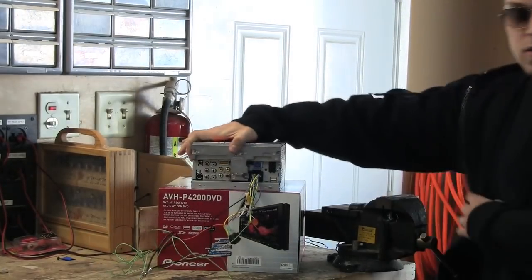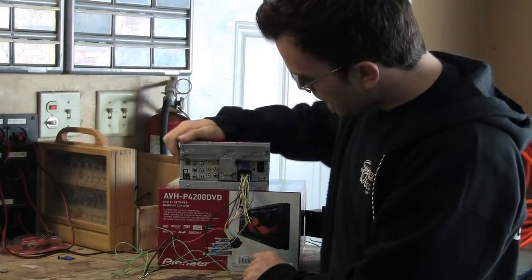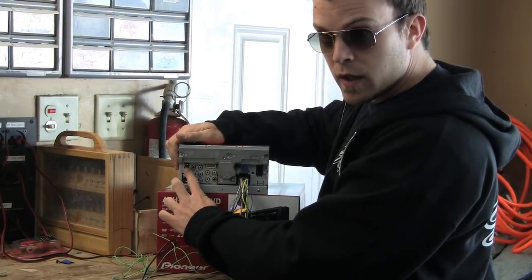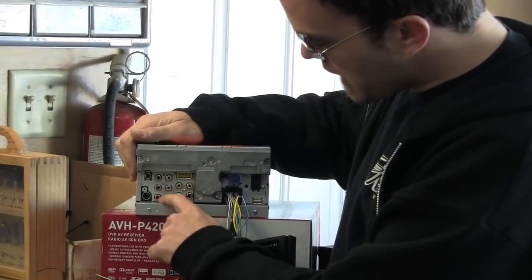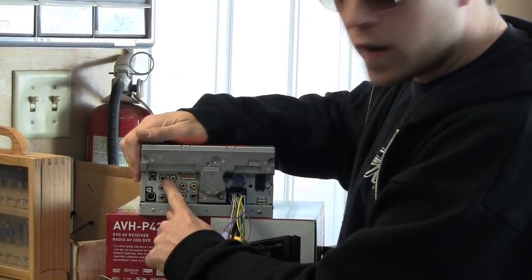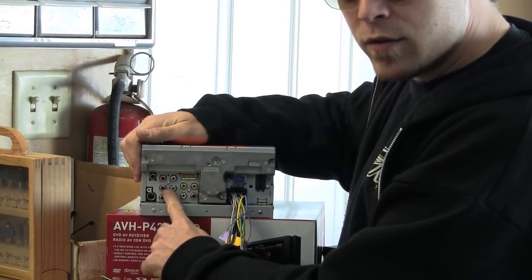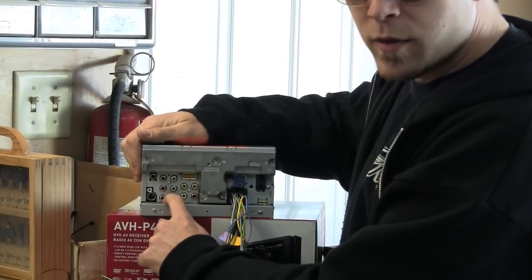Let's take a look at the back of the unit. This brown plug right here, brown RC8N, is for your rear view camera. These are your pre-outs. So this is the rear pre-out for an amplifier. This is the front pre-out for the amplifier. This is the subwoofer pre-out.